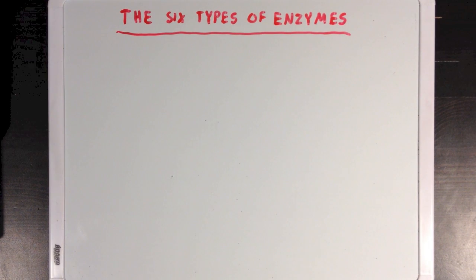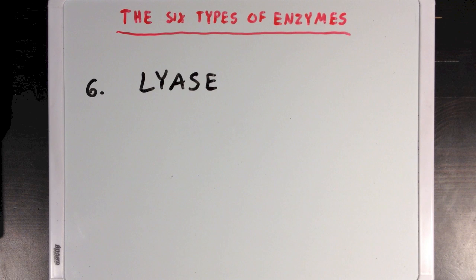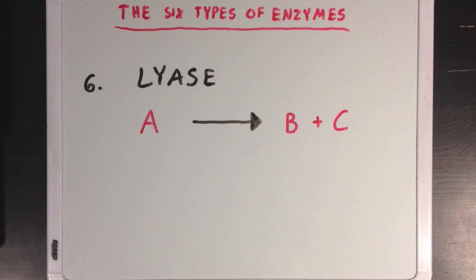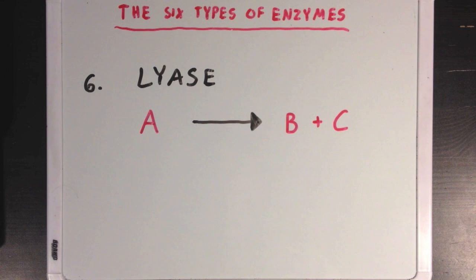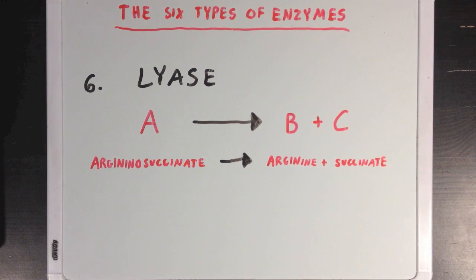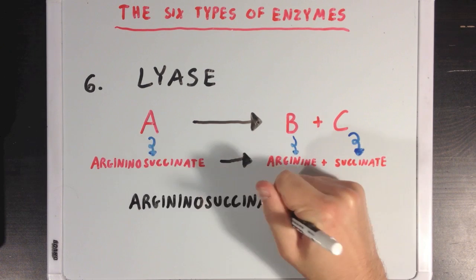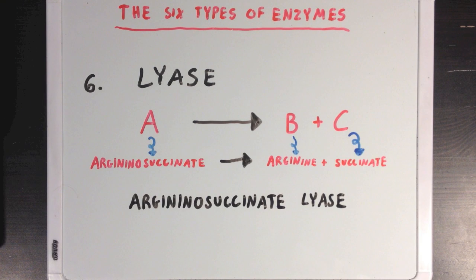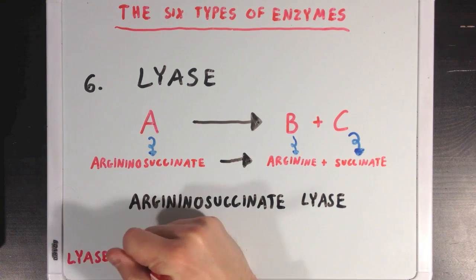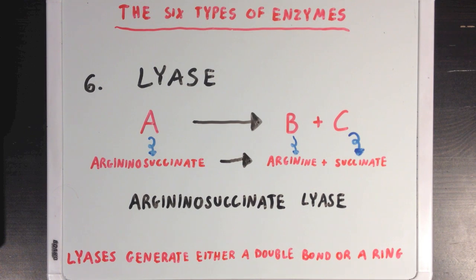Our last category is a little more complicated than the others: the lyase group. Lyases catalyze the dissociation of a molecule, like molecule A, into molecules B and C without using water like hydrolases would, and without using oxidation or reduction like an oxidoreductase would. One example is the cleavage of argininosuccinate into arginine and succinate, which takes place during the urea cycle. This reaction is catalyzed by an enzyme called argininosuccinate lyase, appropriately named because it is a lyase that catalyzes the breakdown of argininosuccinate. Since lyases don't use water or oxidation to break a bond, they need to generate either a double bond between two atoms or a ring structure in a molecule in order to work.